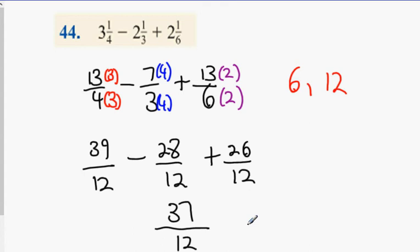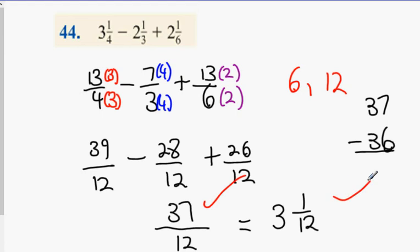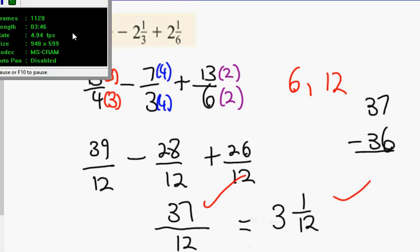37/12, which, if you want to put it into a mixed fraction, is you divide 37 by 12, you get 3. 3 times 12 is 36. 36 minus from 37 is 1. So we've got 3 and 1/12. Both answers of 37/12 and 3 and 1/12 are acceptable. Okay.